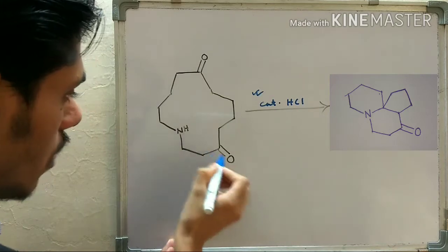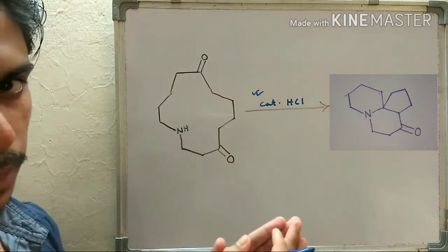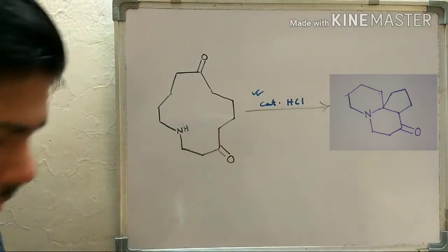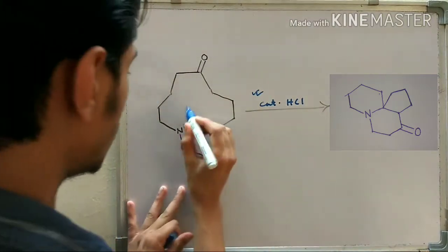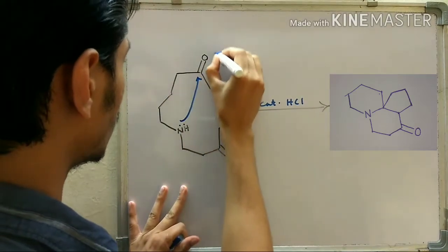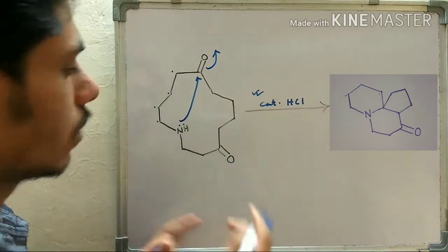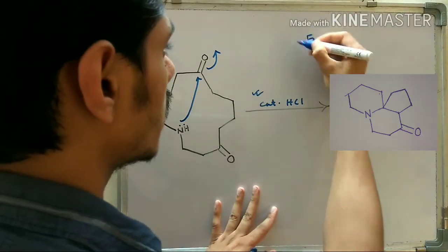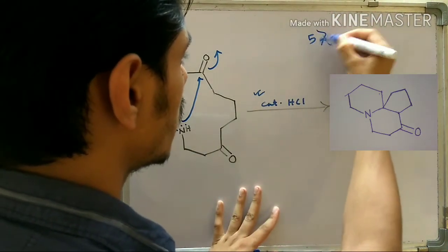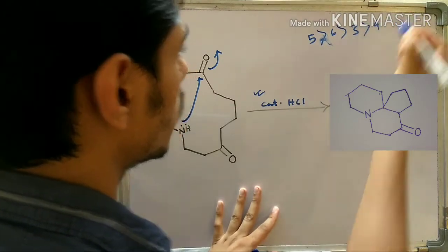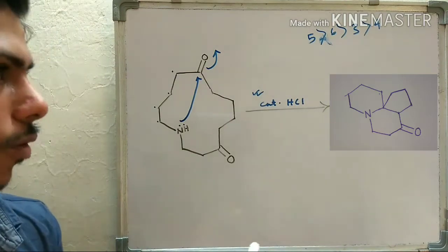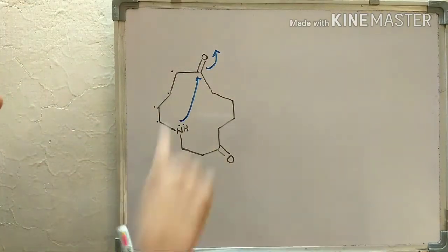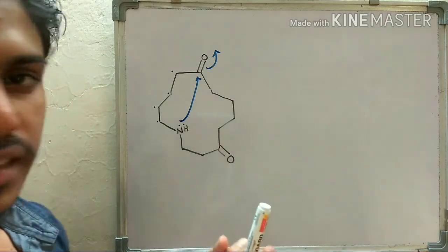If you number the atoms one, two, three, four — the distance between the nitrogen and the nearer carbonyl is four carbon atoms, so it will form a four-membered ring if it attacks there. But if the nitrogen attacks the other carbonyl, you count one, two, three, four, five, six — you get a six-membered ring. Considering ring formation kinetics: five-membered ring forms fastest, then six-membered, then three, then four. So between a four-membered and a six-membered ring, it will always go for the six-membered ring.